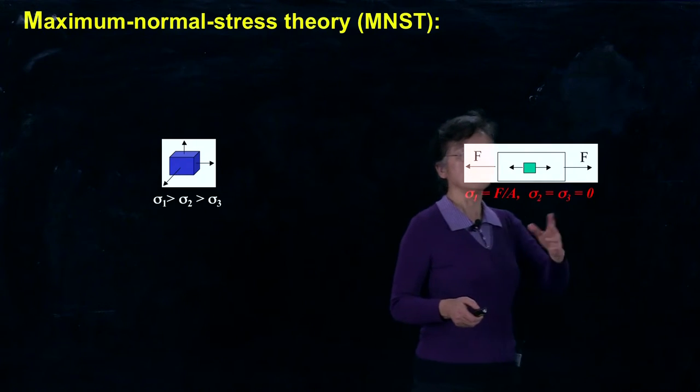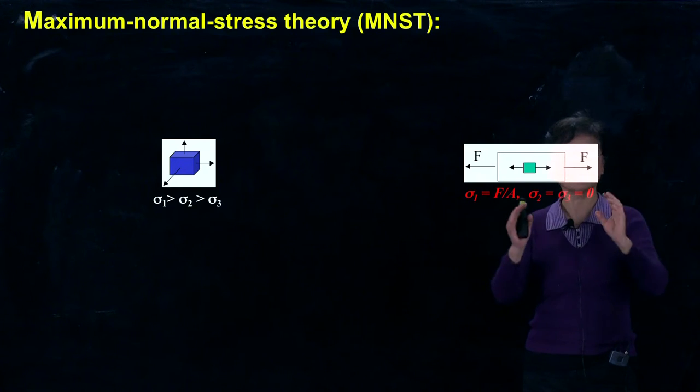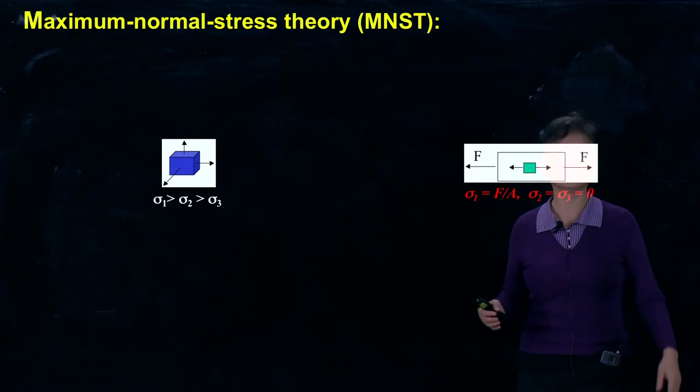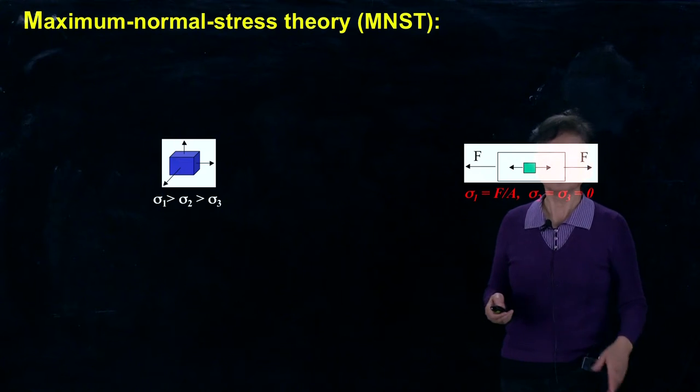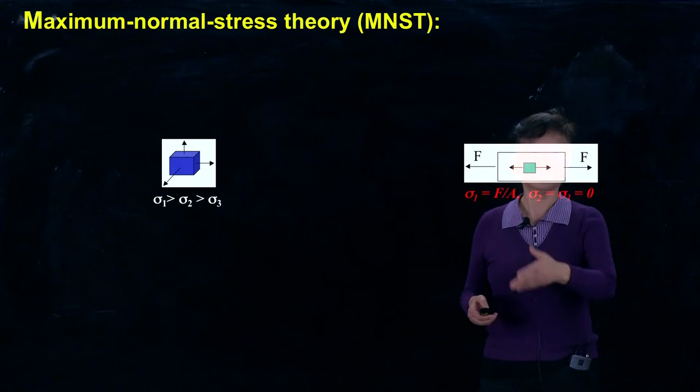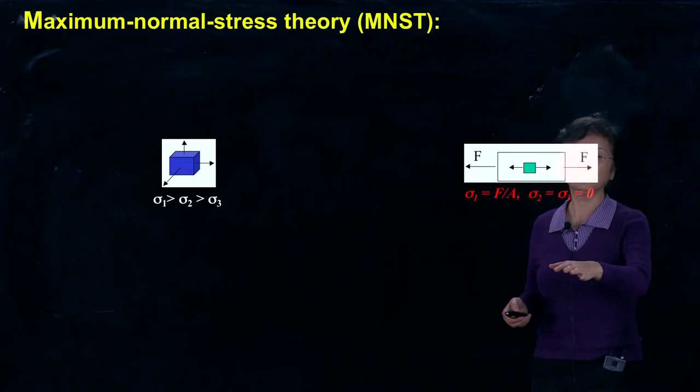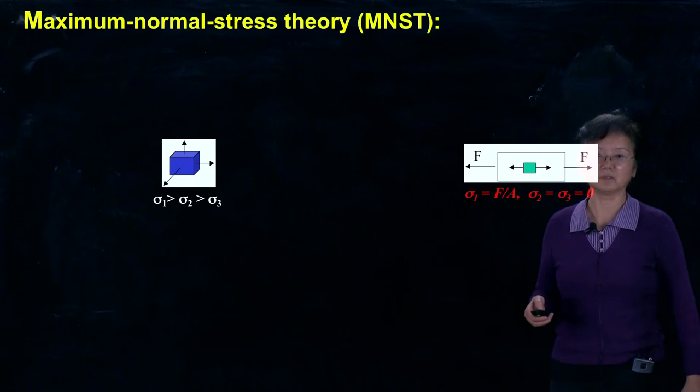On the other hand, we have the standard test: tensile test or compression test, uniaxial. Basically, it's a uniaxial loading test. We can figure out the principal stresses: σ1, which is obviously force divided by area, and σ2 and σ3, which are both zero.